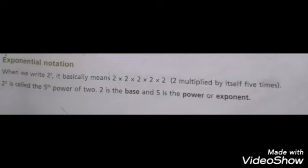Exponential notation: when we write 2 par 5, it basically means 2 ki par 5 hai. Learn this column.